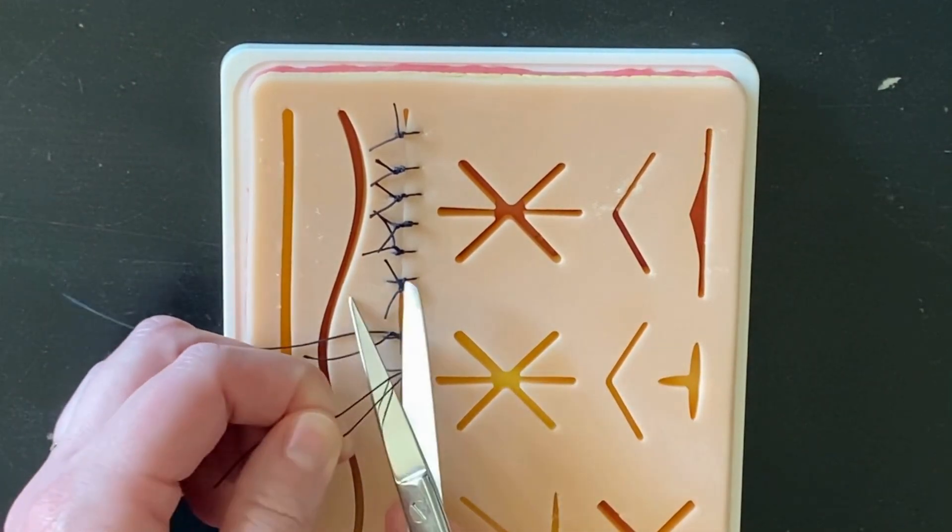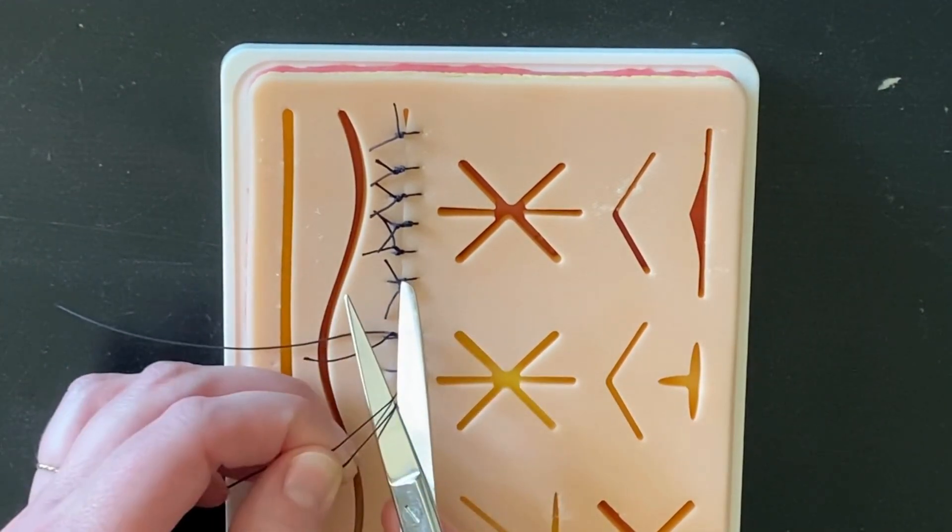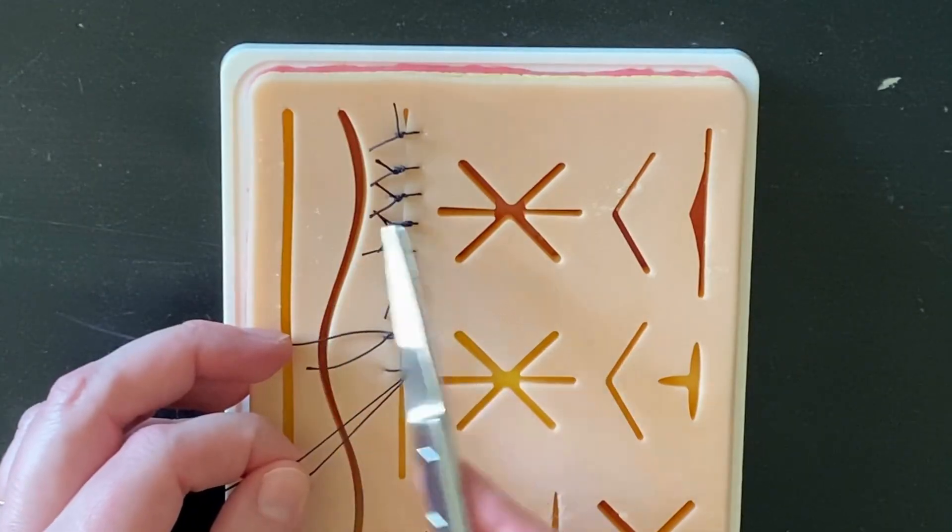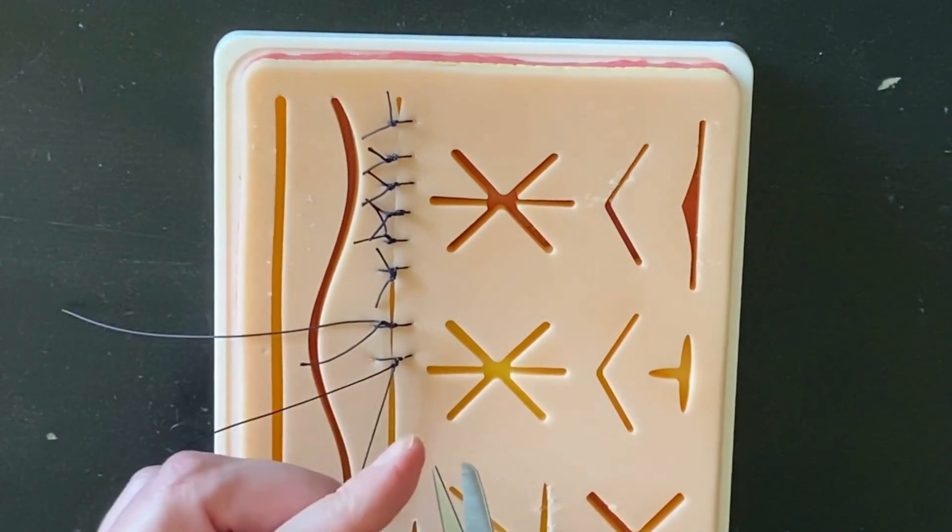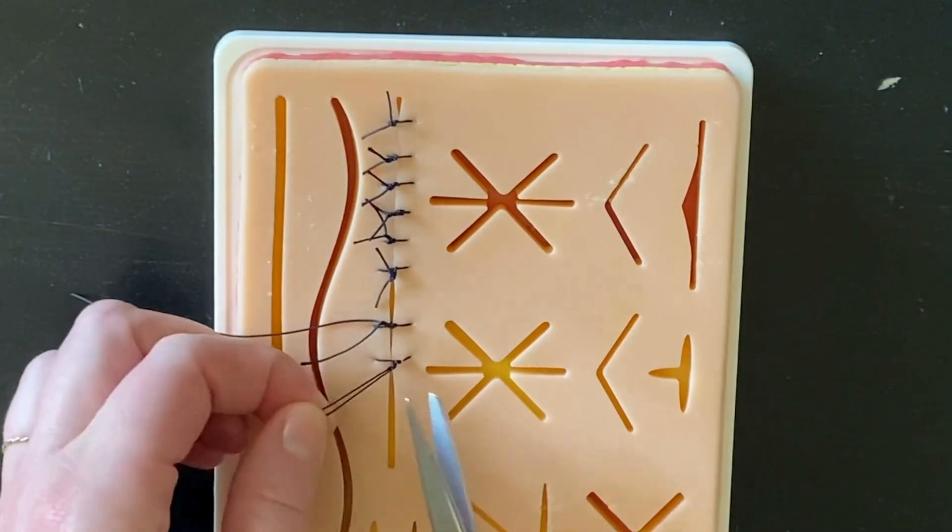It's important not to cut the suture with a large amount of tine through the suture. You never know what kind of anatomy or other sutures are going to be on the other side of the suture that you're cutting that you could compromise. So you're really wanting to cut with the tips of the suture.